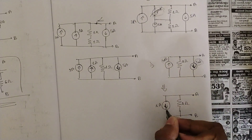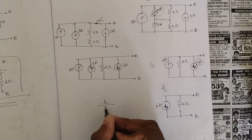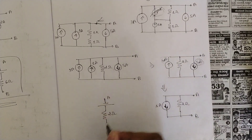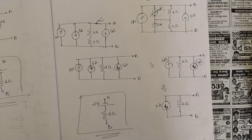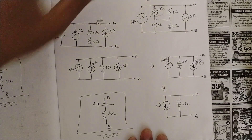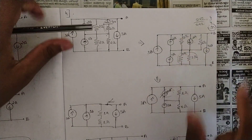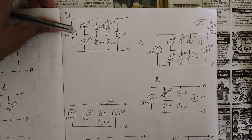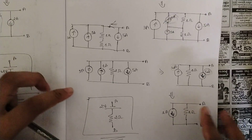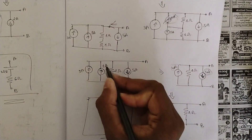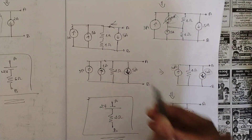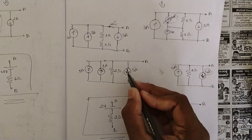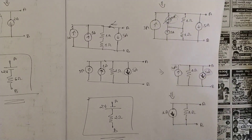Finally, convert the current source to a voltage source. The polarity direction is minus-plus, so we write minus-plus with the 2 ohm resistor in series between terminals A and B. V = I × R = 1 × 2 = 2 volts. So the final reduced circuit is 2 volts along with 2 ohms. This problem looked complicated, but by solving it step by step and analyzing where to start, it becomes manageable. Key point: when subtracting parallel currents, always subtract the lesser from the greater and keep the polarity of the greater current.